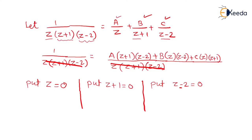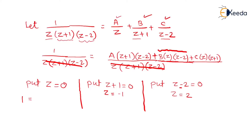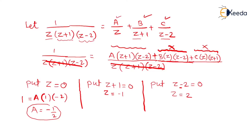Substituting z=0: the B and C terms both contain z as a factor, so they vanish, leaving only the A term: A(0+1)(0-2) = 1, giving A = -1/2.